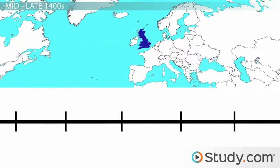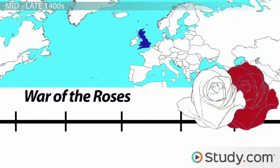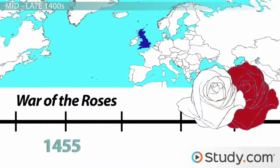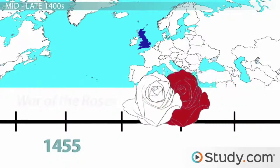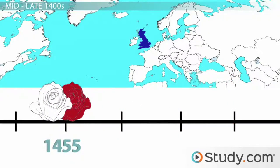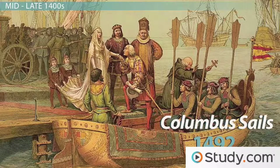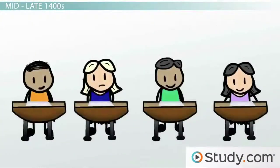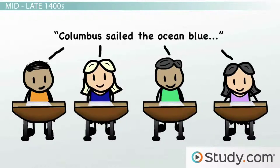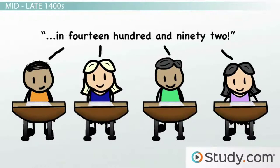Not wanting to be left out of any action, England gets involved in her own struggle, known as the War of the Roses, which began in 1455 as a family feud of sorts between the houses of York and Lancaster. Unlike the game show, this one lasted for over 30 years. To take a break from all the fighting, we have another high point as Columbus sails in 1492. Here we should just take a moment and honor elementary school teachers all over the land by simply saying: Columbus sailed the ocean blue in 1492.